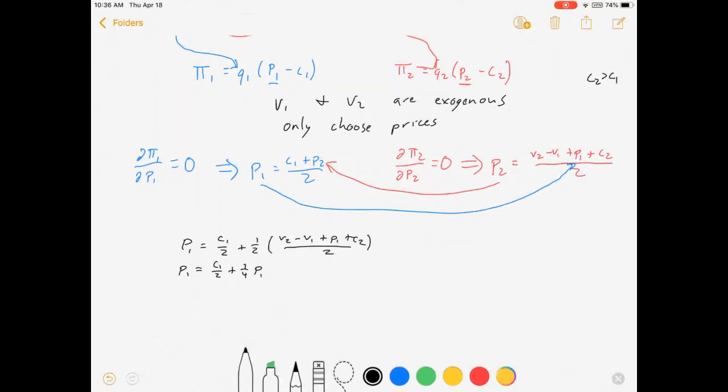I'm solving for p1 here after all, plus 1 fourth v2 minus v1 plus c2. So there's 3 fourths p1 equals all that stuff. And then we're going to get p1 equals v2 minus v1 over 3 plus 2 thirds c1 plus 1 third c2.